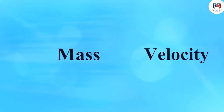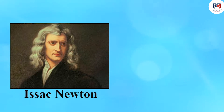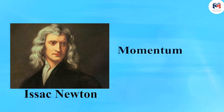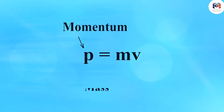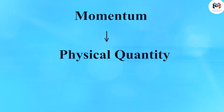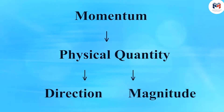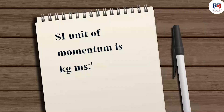This indicates there may exist a certain quantity that combines the mass and velocity of an object. Sir Isaac Newton introduced one such quantity called momentum. Mathematically, the momentum p of an object is defined as the product of its mass m and velocity v. Momentum is a physical quantity that has both direction and magnitude; the direction of momentum is the same as that of velocity — it is a vector quantity. The SI unit of momentum is kilogram meter per second.